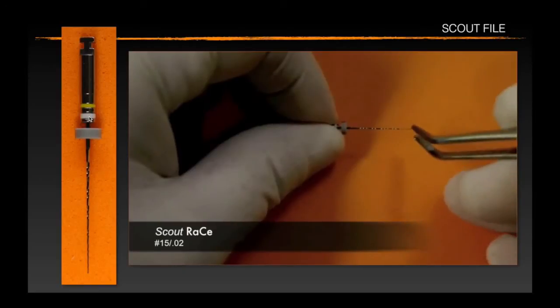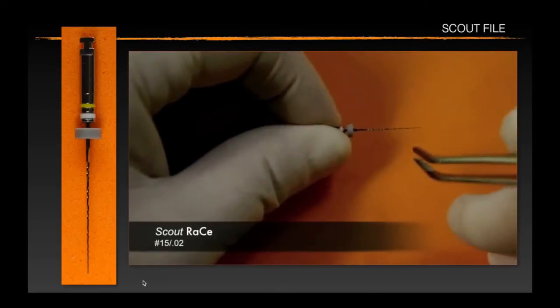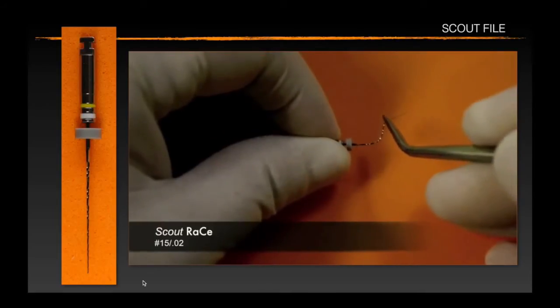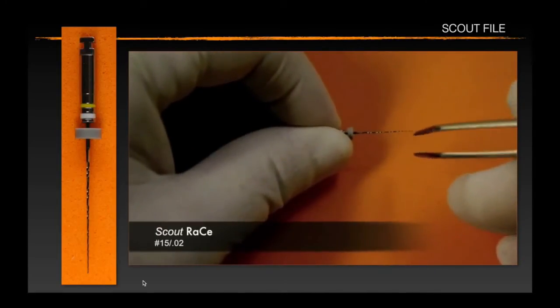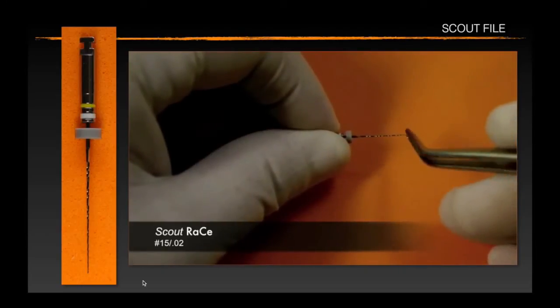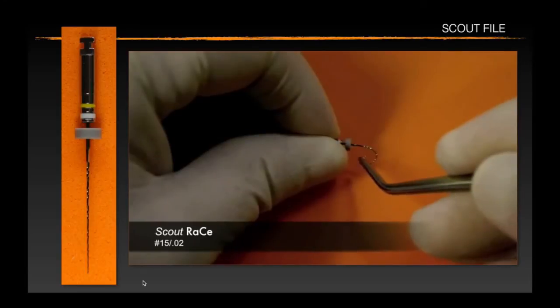A couple of years ago I bumped into this instrument here. This is a 1502 nickel titanium file. It's made by our friends at Brassler USA. They came up with this idea of having this extremely flexible instrument.